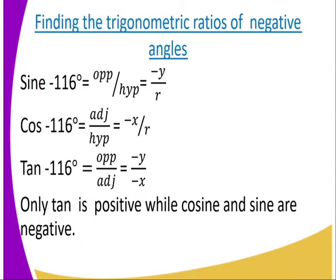For negative 116 degrees: sine negative 116 is opposite over hypotenuse, which is negative y divided by r. Cosine negative 116 is the adjacent divided by the hypotenuse, which is negative x divided by r. Tan negative 116 is negative y divided by negative x, making tan positive while cosine and sine are negative — these are the third quadrant properties.